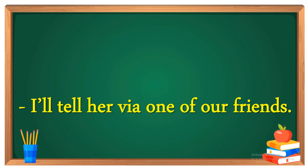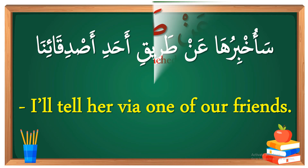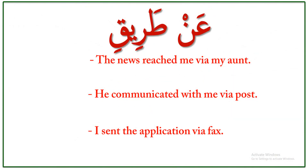I'll tell her via one of our friends. How to say this sentence in Arabic? We say: سأخبرها عن طريق أحد أصدقائنا. سأخبرها means 'I'll tell her', عن طريق means 'via', أحد means 'one of', أصدقائنا means 'our friends'. So 'via' in Arabic language means عن طريق. As you can see, it comes most of the time in the middle of the sentence.